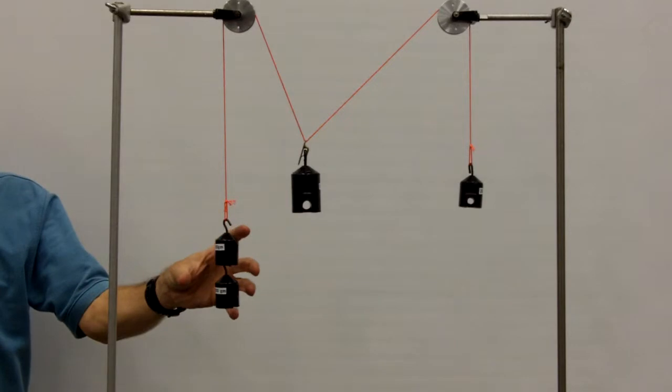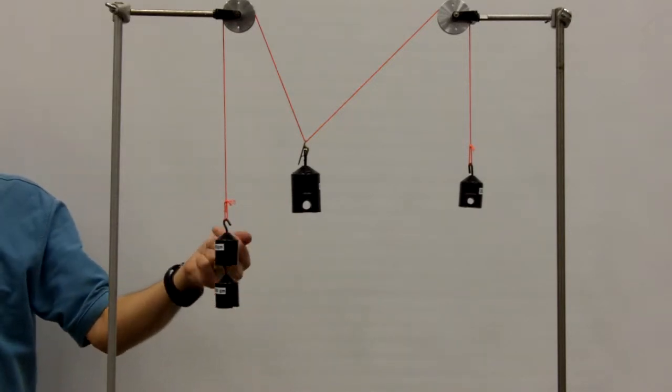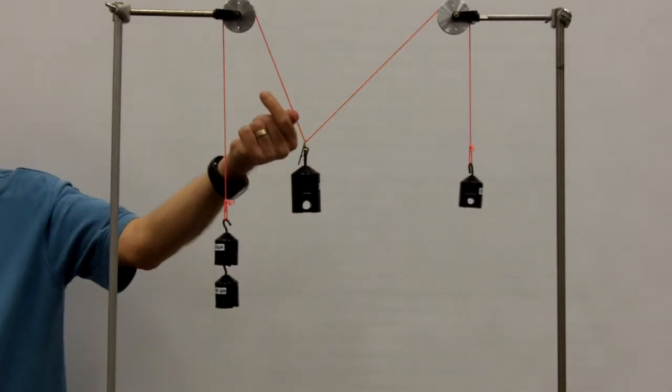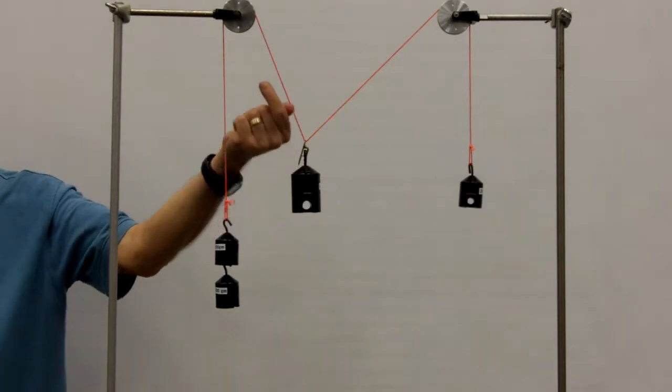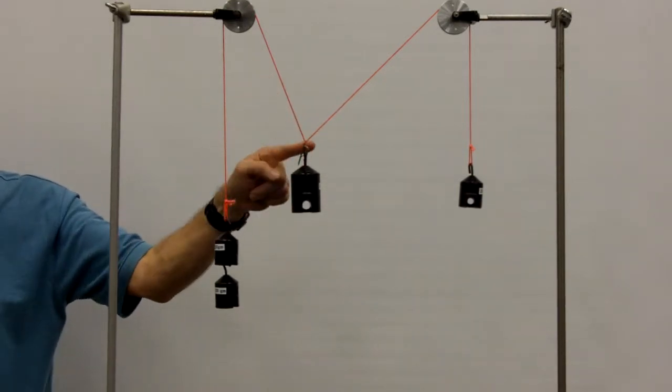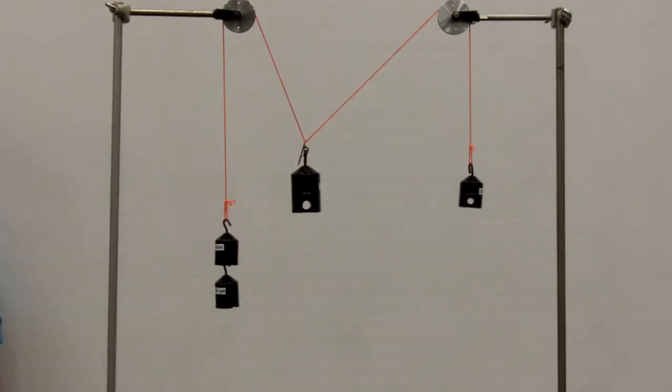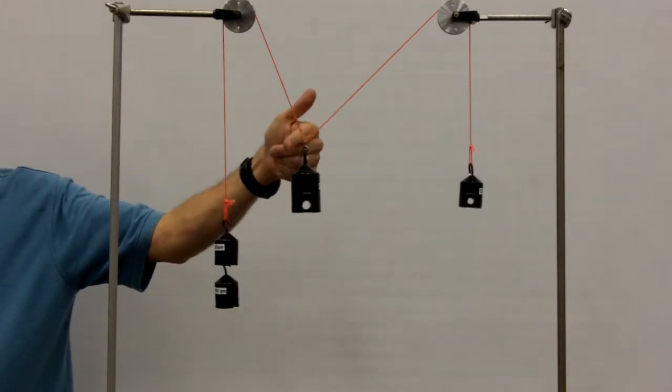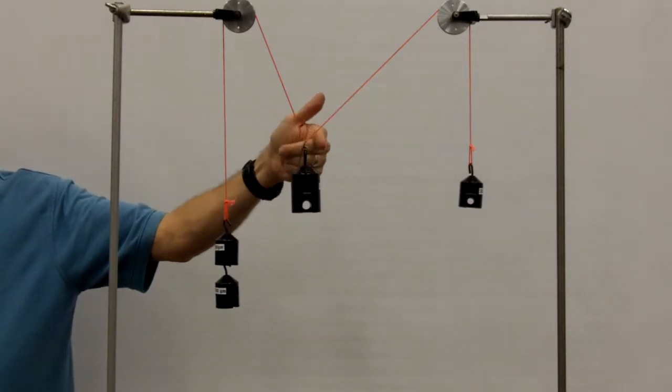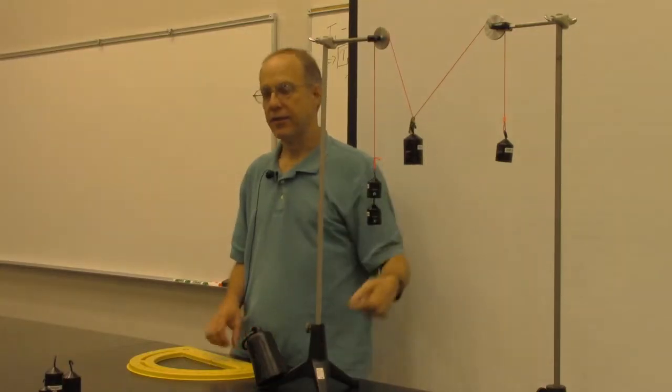Because there's more mass on this side, then this tension will be larger than this, and therefore this string will be more vertical than this string is. One can use the sum of the forces in X and the sum of the forces in Y at this point to illustrate the static equilibrium at this point.